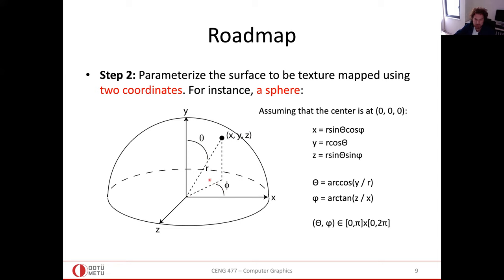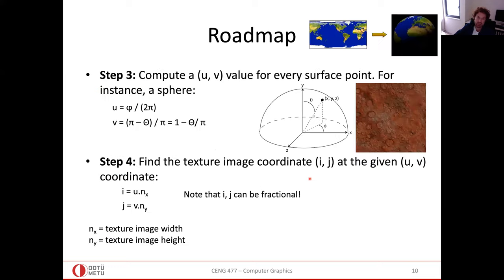Phi makes you move along the equator — as you increase it, you travel along the equator. It runs from 0 to 2π (360 degrees). Then theta runs from 0 to 180 degrees and moves you vertically. So effectively, instead of x, y, z, I can use phi and theta, which I compute from the x, y, z coordinates. In the end, I have 2D coordinates in terms of angles, and my task is to map those 2D angles to my 2D UV space, which is relatively easy. Since U and V must be within [0, 1], I normalize phi by 2π, and normalize theta by π then subtract from 1.